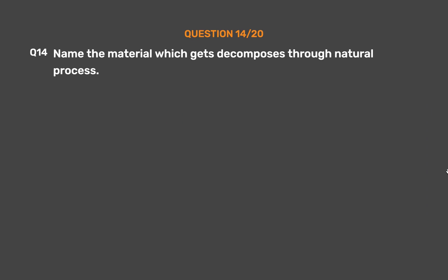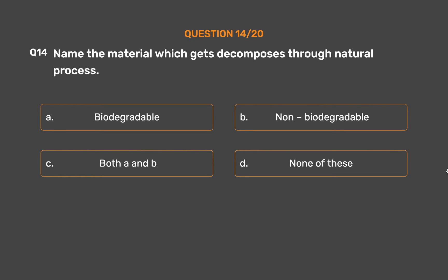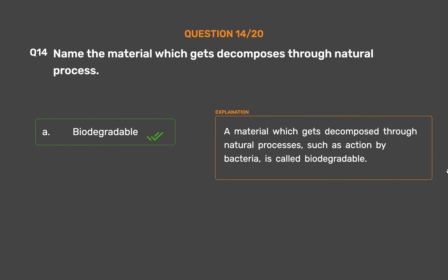Question Number 14. Name the material which gets decomposed through natural processes. Option A: Biodegradable. Option B: Non-biodegradable. Option C: Both A and B. Option D: None of these. The correct answer is Option A: Biodegradable. A material which gets decomposed through natural processes, such as action by bacteria, is called biodegradable.